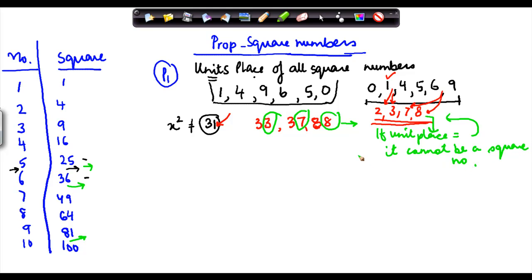So this is the first rule of square numbers property. Now let me take you to the second square number.